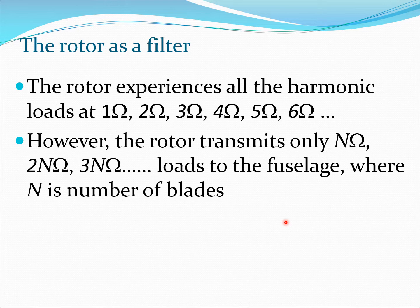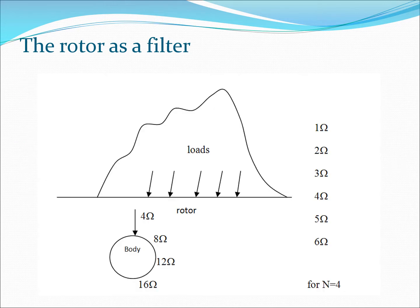What is actually transmitted by the rotor to the fuselage are only the multiples of the rotor speed — N times rotation speed, 2N times rotation speed, 3N times rotation speed — where N is the number of blades. Looking at this more concretely: various loads act on the rotor with harmonic content ranging from one-per-rev, two-per-rev, three-per-rev and so on.